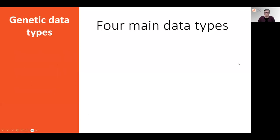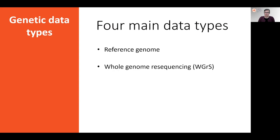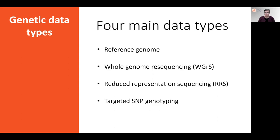The Threatened Species Initiative is supporting four main genetic data types that are commonly used in threatened species management: reference genomes, whole genome resequencing, reduced representation sequencing, and targeted SNP genotyping approaches.